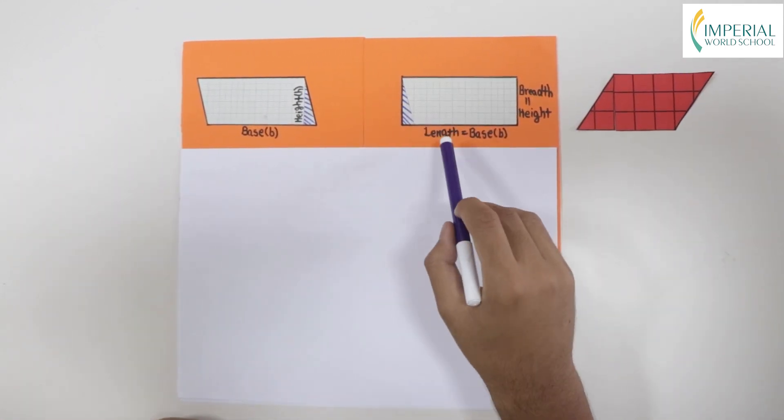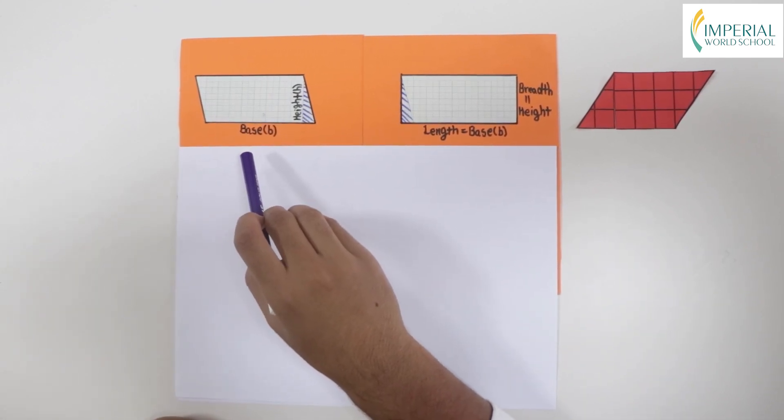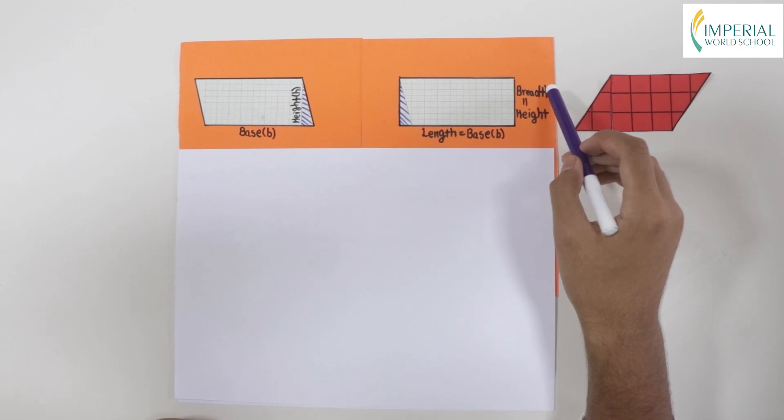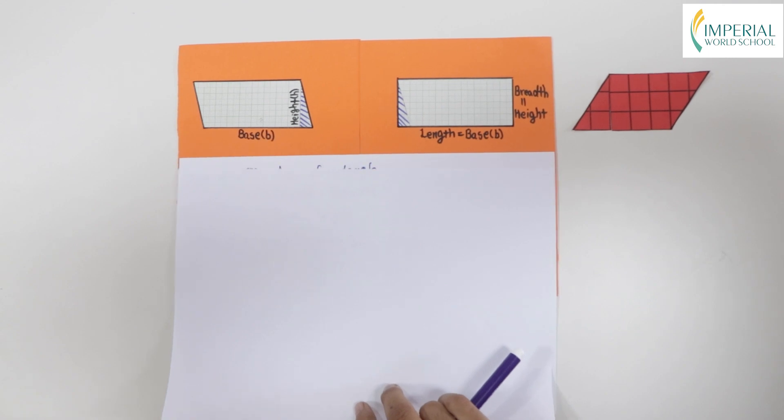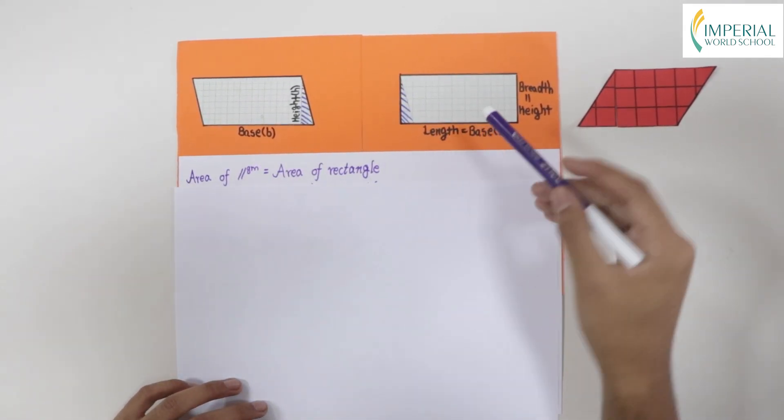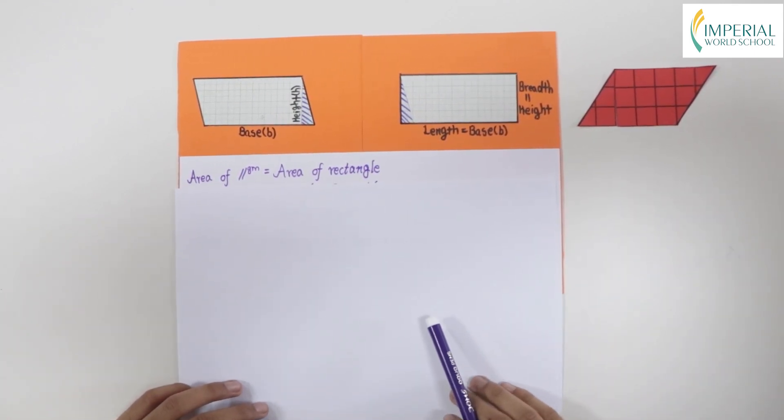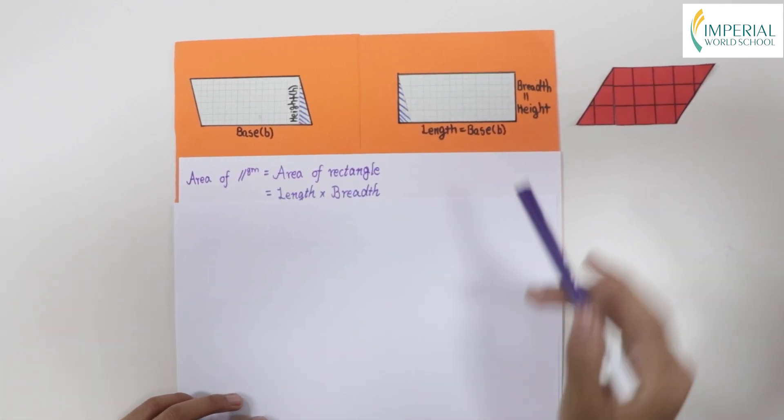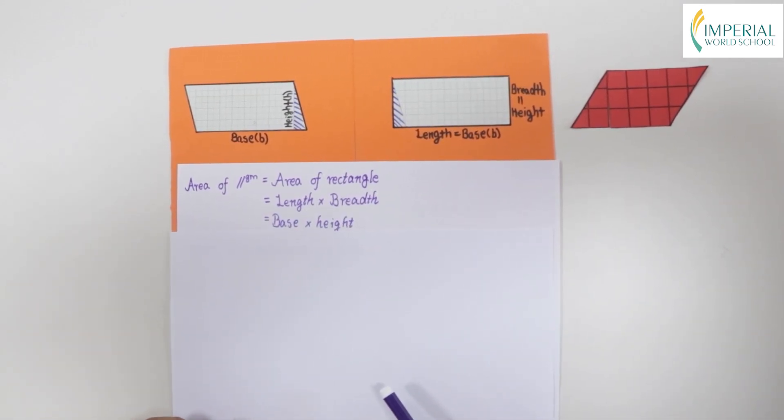We know the length of a rectangle turns into the base of a parallelogram and the breadth of a rectangle turns into the height of a parallelogram. So now the area of a parallelogram is equal to the area of a rectangle and the formula of area of a rectangle is length into breadth which then turns into base into height.